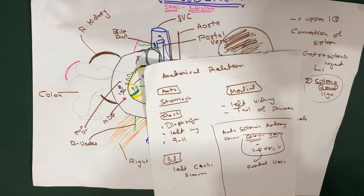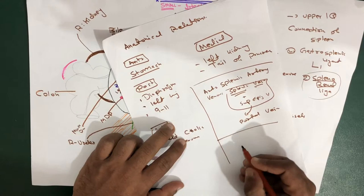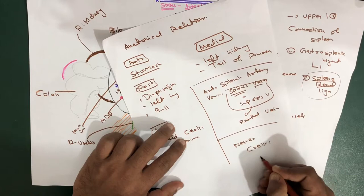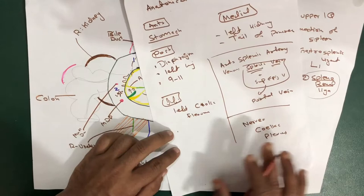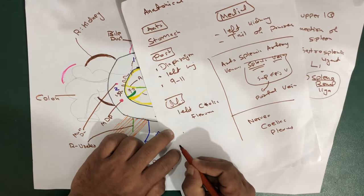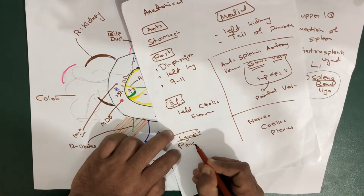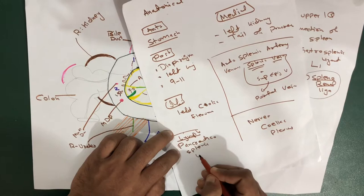If you talk about the nerve supply, the nerve supply is your celiac plexus. As for lymphatics, I won't be talking about them in detail, but just a hint: the lymphatics of the whole spleen drain into your pancreatic splenic lymph nodes.